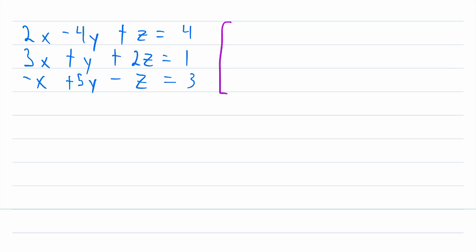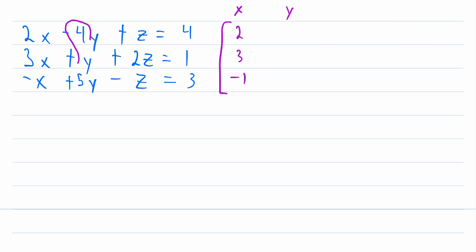For starters, we can create what's called a coefficient matrix. This matrix just stores the coefficients of the variables in the equations. In the first column, we have the coefficients of x — in this case that's two, three, and negative one. In the second column, we've got the coefficients of y, which are negative four, one, and five. Then in the third column, we've got the coefficients of z: one, two, and negative one. And that is our coefficient matrix.